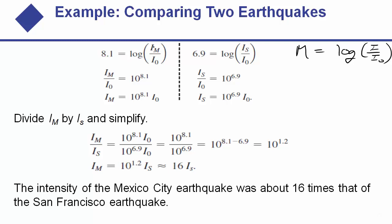To solve for i_M and i_S we raise 10 to both sides of each equation, giving i_M = i₀ times 10 to the 8.1 and i_S = i₀ times 10 to the 6.9. To compare, we form a ratio i_M over i_S — the i₀ terms cancel — leaving 10 to the (8.1 minus 6.9) = 10 to the 1.2, which is approximately 16. The Mexico City earthquake was roughly 16 times stronger than the San Francisco earthquake.